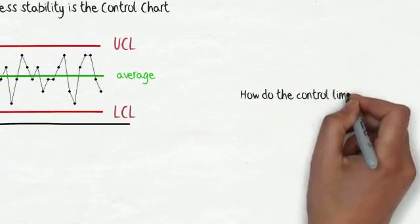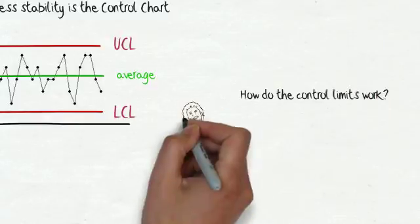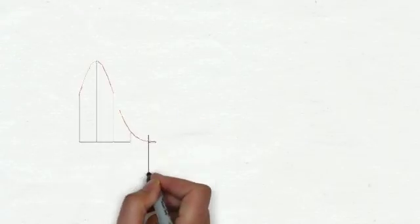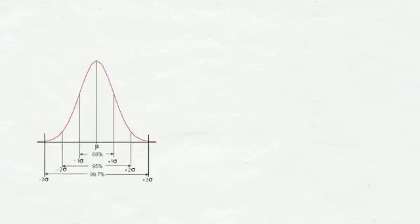But how do the control limits work? Control limits are plus or minus three standard deviations from the center line. If we look at a normal distribution, we know that 68% of the data is within plus or minus one standard deviation, 95% of the data is within plus or minus two standard deviations, and 99% of the data is within plus or minus three standard deviations.